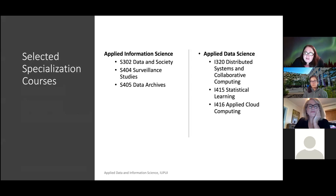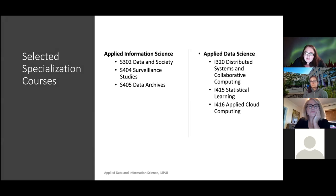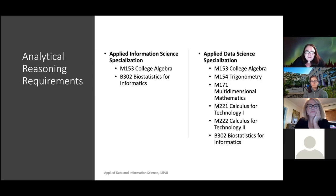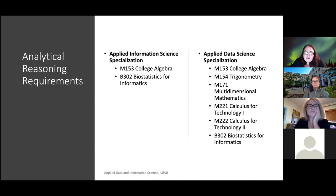Here are some selected classes you will take depending on your specialization. For the Applied Information Science Specialization, you will have additional courses that consider societal considerations for data, and a data archives class to consider long-term data management. For the Applied Data Science Specialization, you'll have additional courses in data analytics as well as some additional technical courses. Both specializations require some math and statistics, and students in the Applied Data Science Specialization will take a few more math courses that will be particularly helpful for classes in statistical learning and cloud computing.